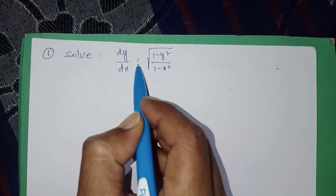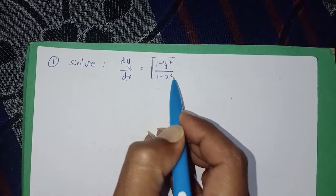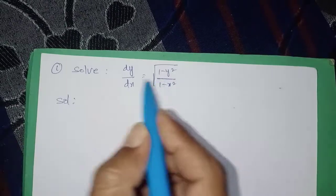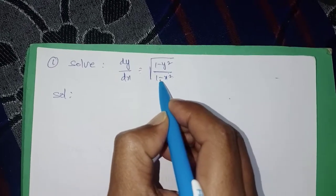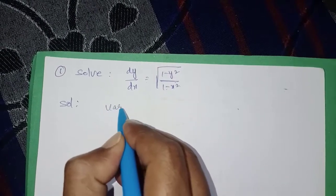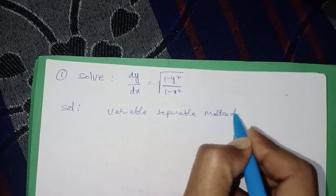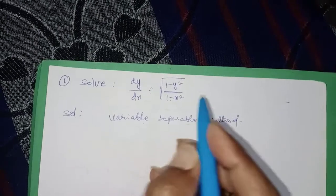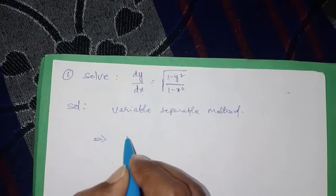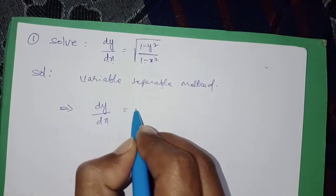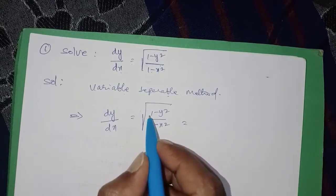Solve dy/dx equal to under root (1 minus y square) upon (1 minus x square). To solve this first order differential equation, we have to use the variable separable method. Write down the given equation: dy/dx is equal to under root (1 minus y square) upon (1 minus x square).